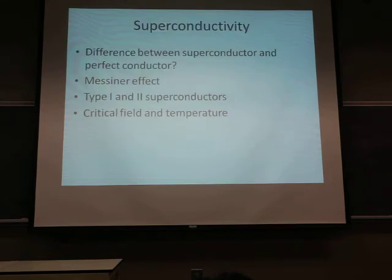So, superconductor is a special form of conductivity for metal. And what's the difference between superconductor and perfect conductor? It is the field inside the conductor. And to explain the superconducting behavior, people use the Meissner effect. What is the Meissner effect? You should be able to know after this course. And what are the type 1 and type 2 superconductors? And there will be critical field and the critical temperature associated with the superconductor.